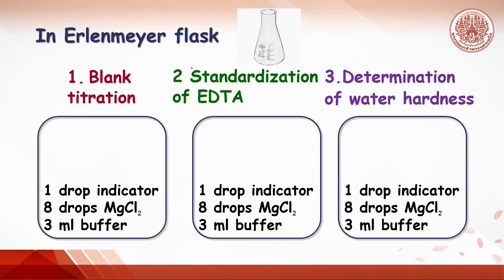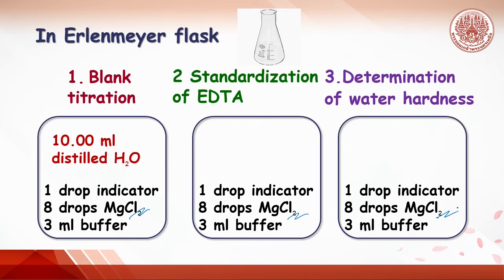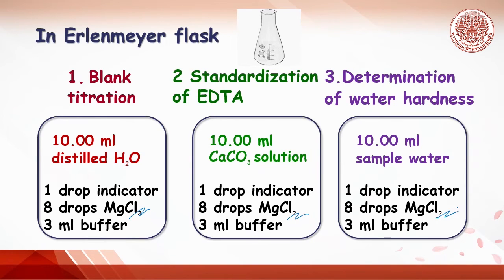In Section 1, blank titration: the reason for this step is that the indicator requires a trace of magnesium ion to operate properly. A small amount of magnesium chloride is added in all titrations, but since EDTA also reacts with this magnesium ion, this amount of EDTA must be calibrated by a blank titration. In Section 2, EDTA is a secondary standard, so it needs to be standardized with primary standard calcium carbonate. Section 3 is the main aim of the experiment: determination of water hardness. In each section, the amount of indicator, magnesium chloride, and buffer are the same, but the pipetted solution depends on the section.